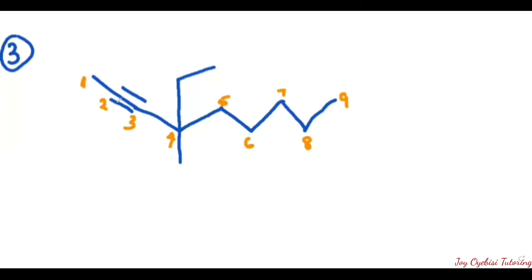Just to confirm — if we count another way we get five, and another way gives six, both of which are less than nine, so neither can be the longest chain. So the longest chain is nine, represented by 'non.' The triple bond started on the second carbon, so we have non-2-yne.